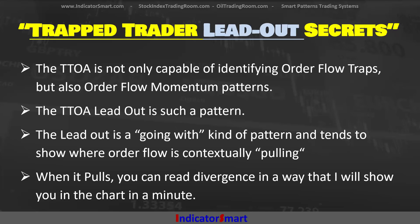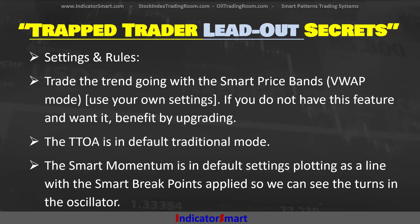It tends to show where the order flow is contextually pulling. This concept of pulling is super important — I've talked about it in many prior videos. When an order flow indicator — a properly designed one — is pulling, you can read divergence in a way that I will show you on the chart in a minute. Another word I could use for that is 'leading.' Order flow tends to lead price. Why? Because it takes orders to drive the price. When they're pushing extremes at a boundary, the probability for follow-through goes much higher — very high. It's a pretty simple concept, but you've got to do it the right way.